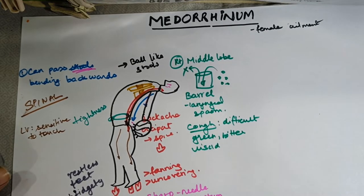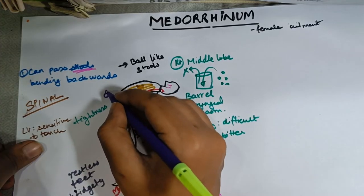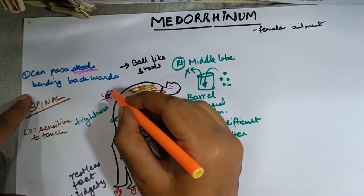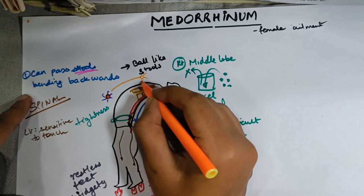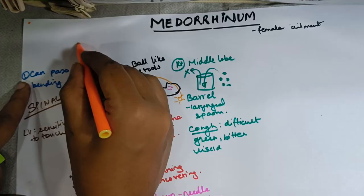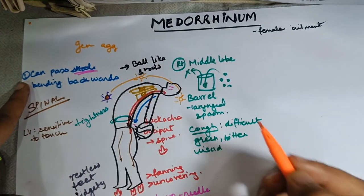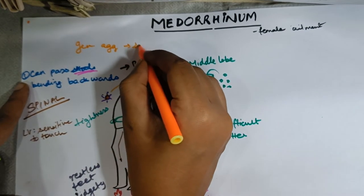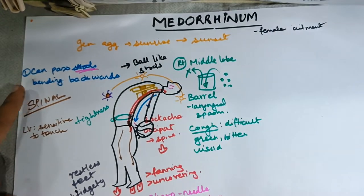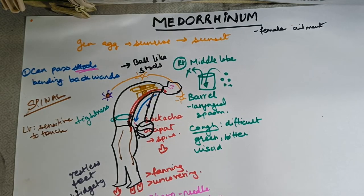There is one more thing I want to draw in the diagram. There is sunrise and then sunset — representing a general aggravation from sunrise to sunset. This is a characteristic modality of Medorinam: general aggravation from sunrise to sunset.